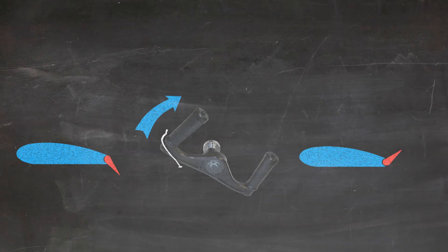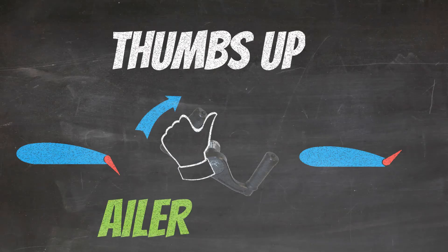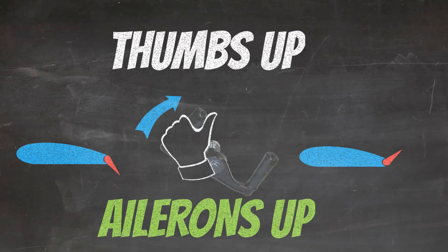Want to know a cool way to remember that? Grip the yoke with both hands and stick both thumbs in the air. Your thumbs will point to the raised aileron. Remember, thumbs up, ailerons up. Now let's talk about something that may be important for the written test.